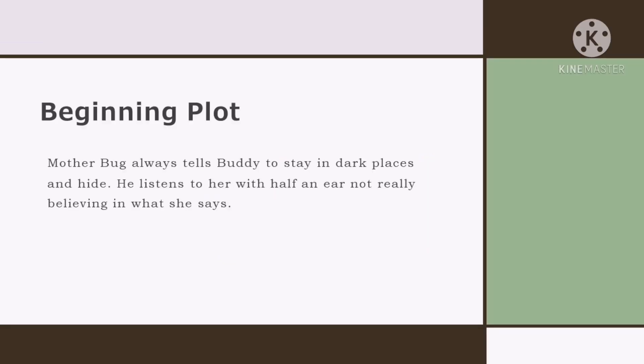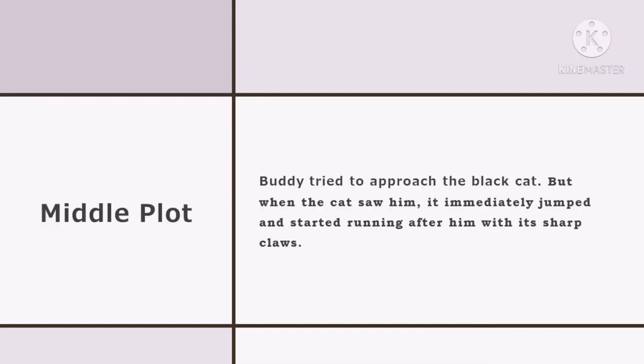Now, the beginning plot includes: Mother Bug always tells Buddy to stay in dark places and hide, and he listens to her with half an ear, not really believing in what she says. The middle plot includes: Buddy tried to approach the black cat, but when the cat saw him it immediately jumped and started running after him with its sharp claws.